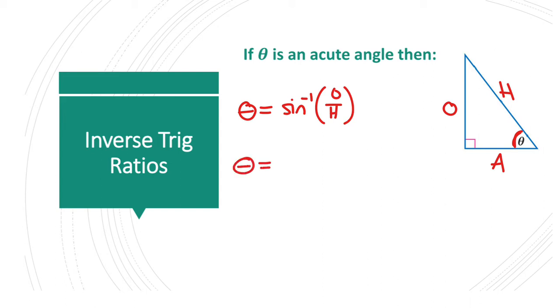Also, we could do cosine inverse, so theta is also equal to your cosine inverse of adjacent over hypotenuse. And lastly, your tangent inverse is your opposite over adjacent here. So we could find theta three different ways using your opposite, adjacent or hypotenuse here.